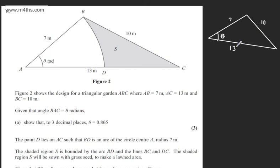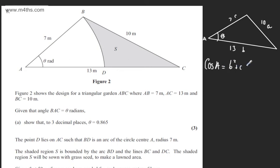We can use the cosine rule to find a missing angle given three lengths. We've got A just here, so this is going to be little a. We've got B just here and C just here. Using the cosine rule: cos A equals B squared plus C squared minus A squared, all over 2BC.